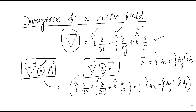In the dot product, only same-component terms survive: i-cap dot i-cap, j-cap dot j-cap, and k-cap dot k-cap. This is because the angle between identical unit vectors is zero, so cos(0) = 1. The mutually perpendicular unit vectors i, j, k have 90° between them, giving cos(90°) = 0, so those cross terms vanish.